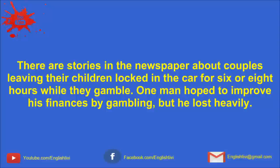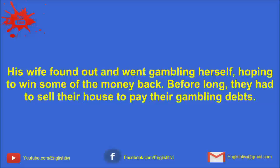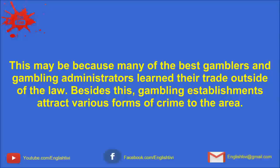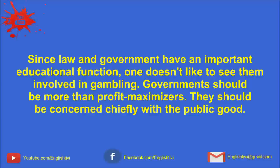There are stories in the newspaper about couples leaving their children locked in the car for six or eight hours while they gamble. One man hoped to improve his finances by gambling, but he lost heavily. His wife found out and went gambling herself, hoping to win some of the money back. Before long, they had to sell their house to pay their gambling debts. Gambling has usually been associated with organized crime. Even today, when government agencies supervise gambling, it would appear that there is still a crime connection. Since law and government have an important educational function, one doesn't like to see them involved in gambling. Governments should be more than profit maximizers. They should be concerned chiefly with the public good.